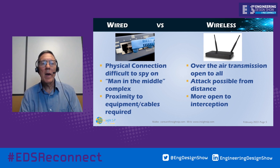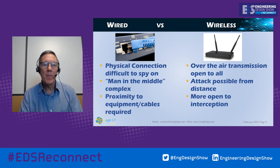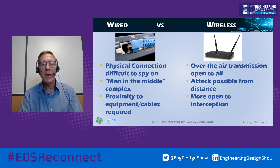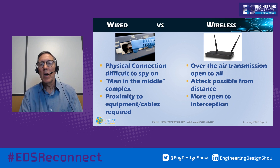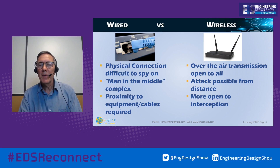Another aspect to consider is the difference between wired and wireless communication. With a wired communication, you have physical connections between every part of the system, and putting a man in the middle to spoof you, steal your data, or interfere is fairly complicated because you need physical access to equipment and cables. In the wireless world, transmission is at least in part over the air, and anything transmitted by waves is potentially open to anybody to look at or steal. This makes attack possible from a distance and more open to interception.